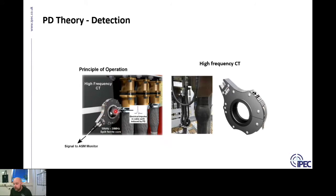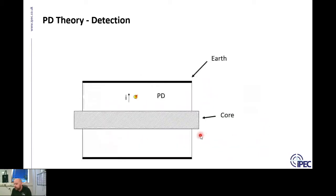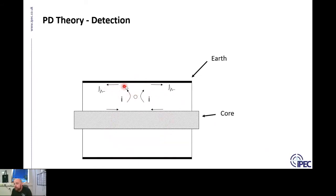HFCTs are quite commonly used for detecting PD in underground cables. If we take a cross section of a cable between two substations, when a small partial discharge occurs at a localized cavity defect — most likely in a joint — it induces a very high frequency signal on the inside of the earth sheath and on the outside of the core. PDs are very low in energy, and this high frequency signal doesn't carry much energy with it.